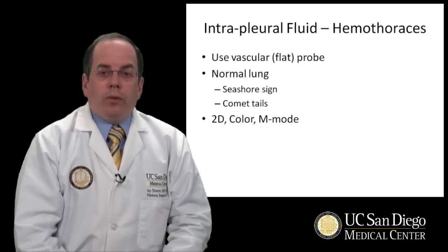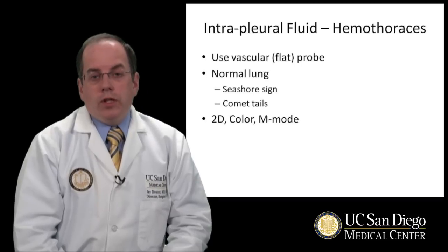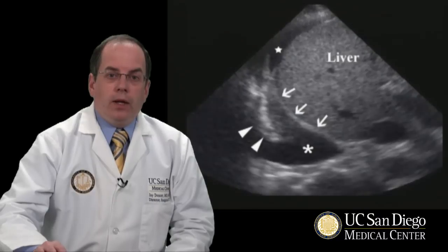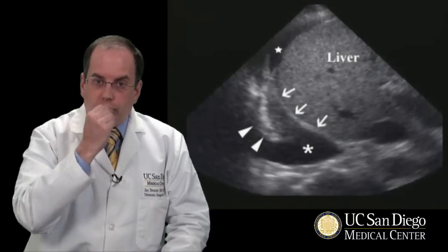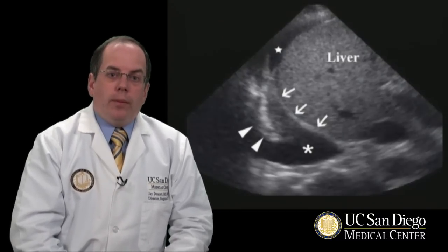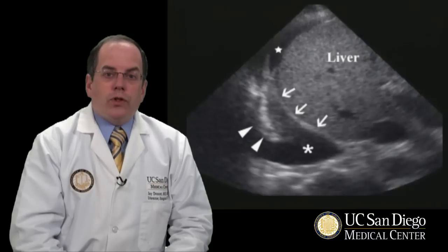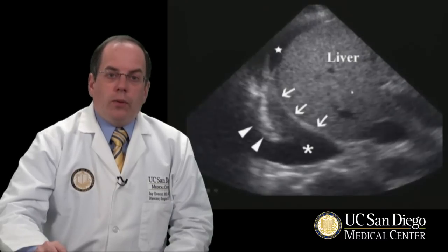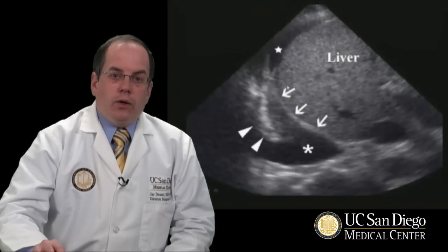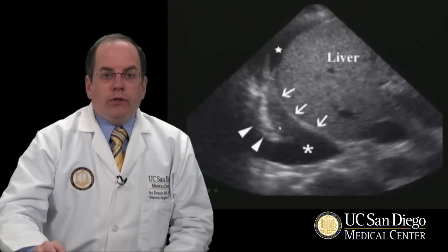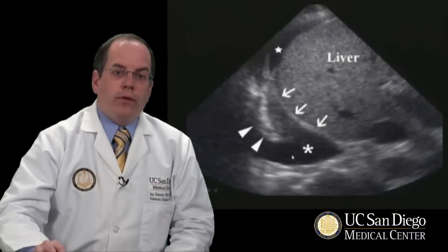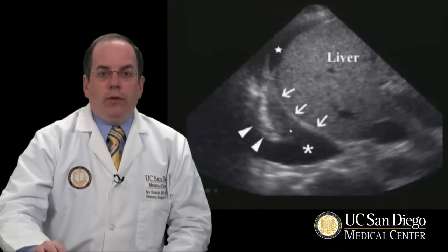There are two findings in the normal situation. One is called the seashore sign using M mode. The other one is called cometails using 2D. Here's an example of fluid seen above the diaphragm using a right upper quadrant view, just higher than Morrison's pouch. The liver is this large granular object with the ducts seen within it. The bright line here is the diaphragm. The lung is not normally very well visible in ultrasound, but when it's surrounded by fluid and collapsed, you can see that there is black fluid above the diaphragm and around the lung. This is a hemothorax. There's fluid seen on both sides of the liver here.